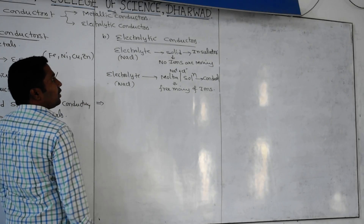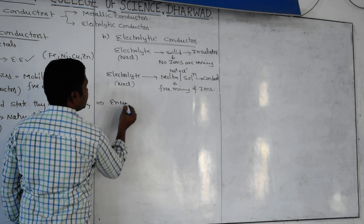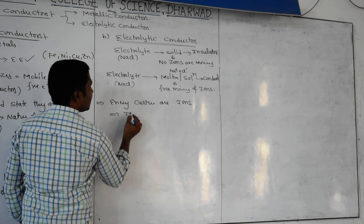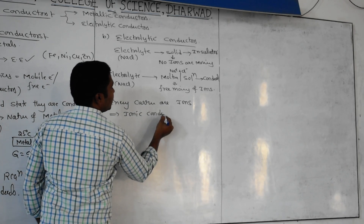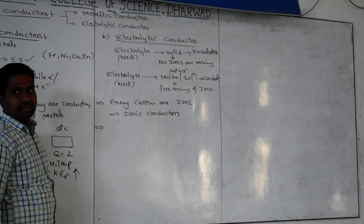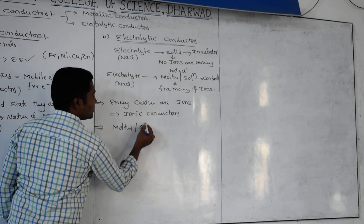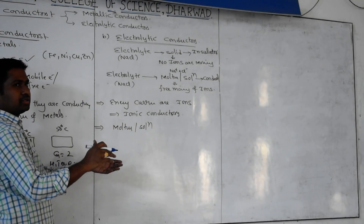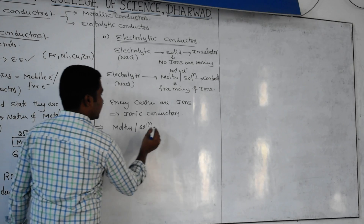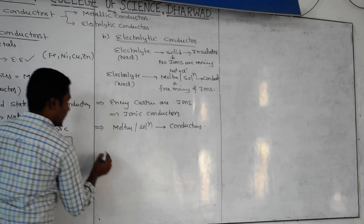In the case of electrolytic conductors, energy carriers are ions, so we call them ionic conductors. They act as conductors either in molten phase or solution phase. In solution phase, water or some other chemical can be used as a solvent.